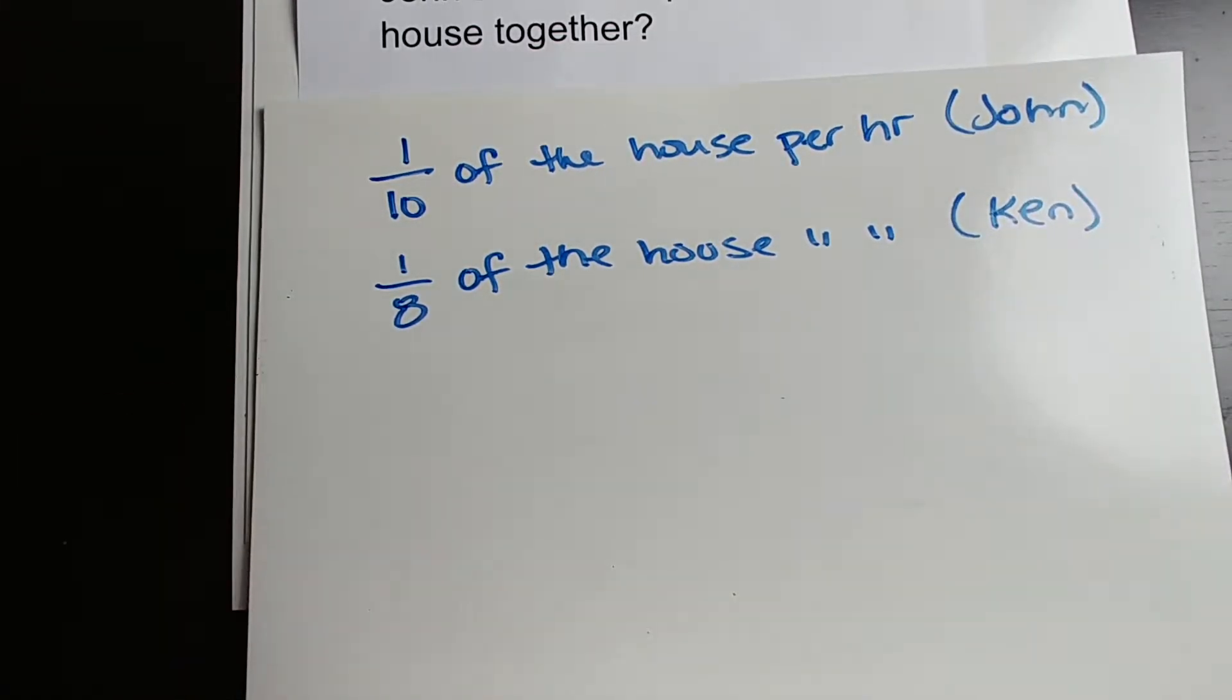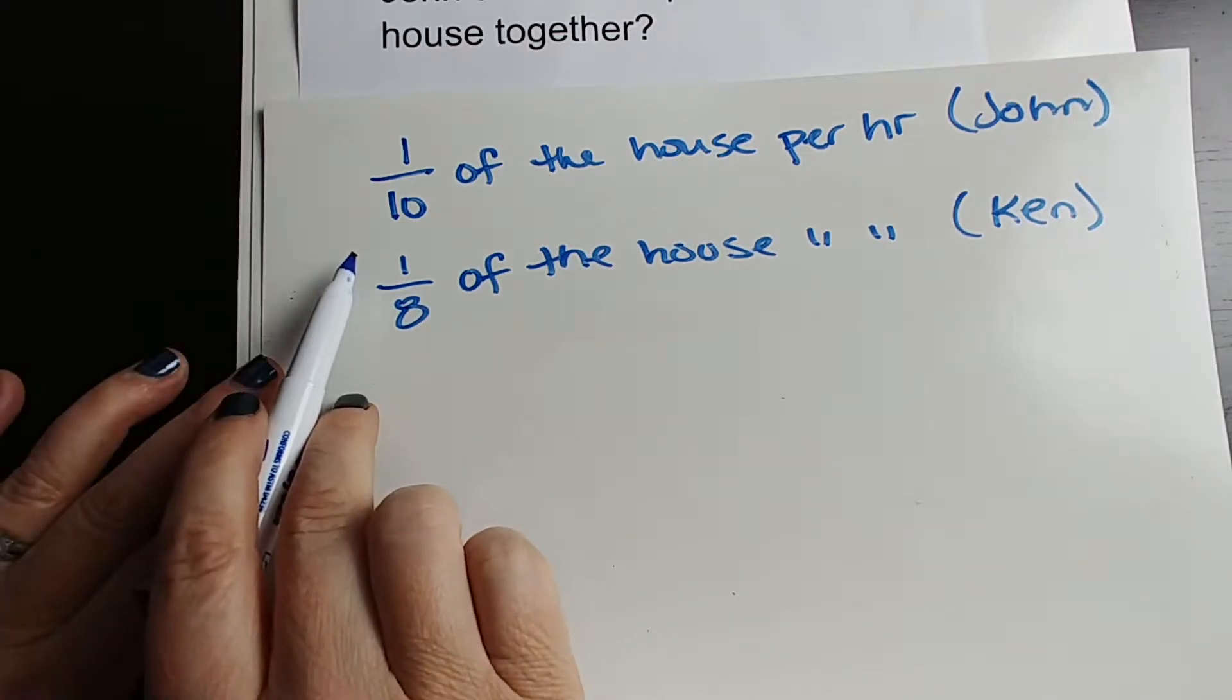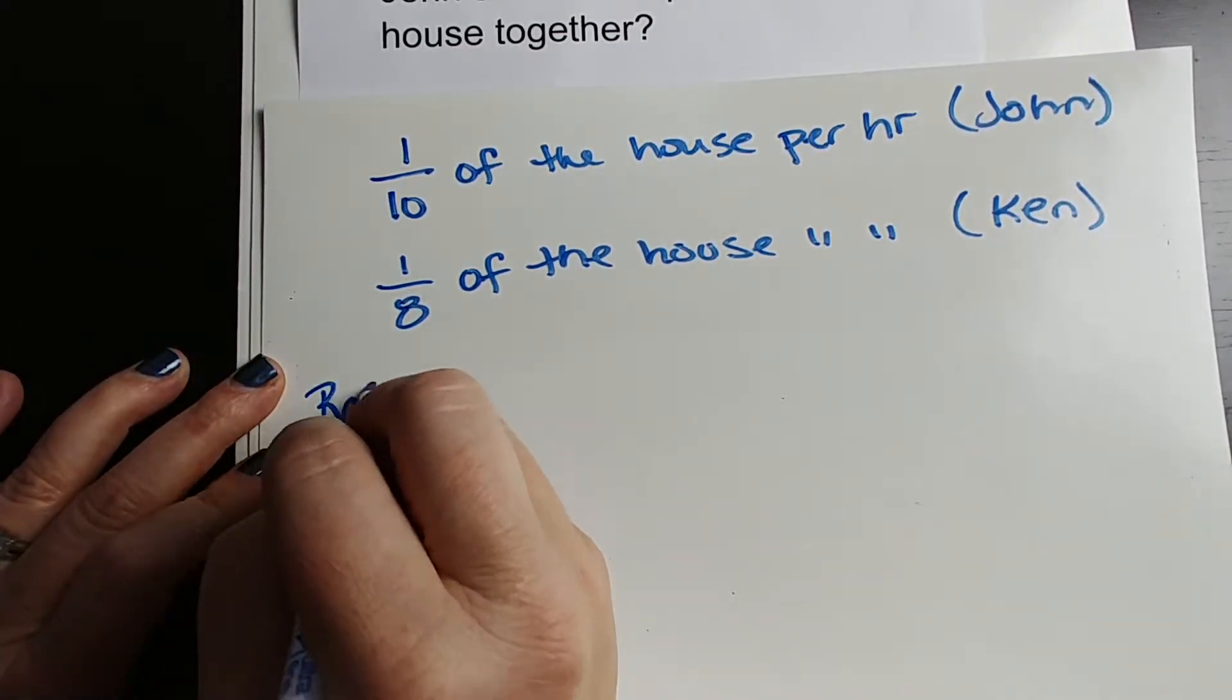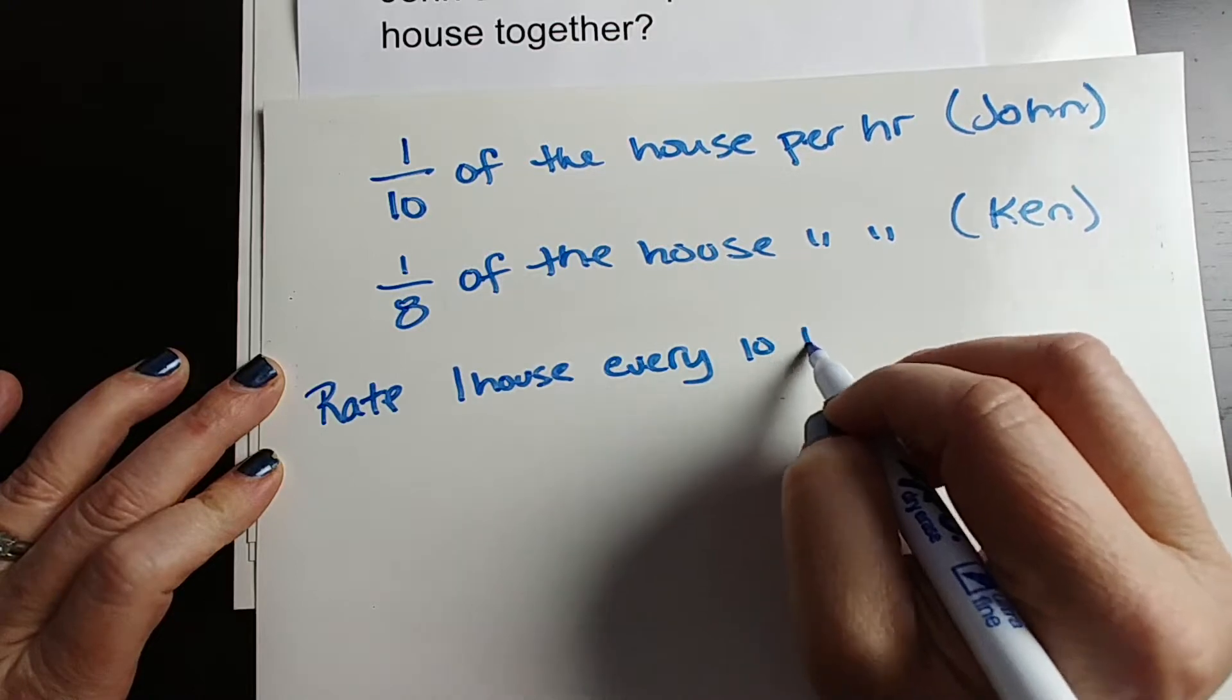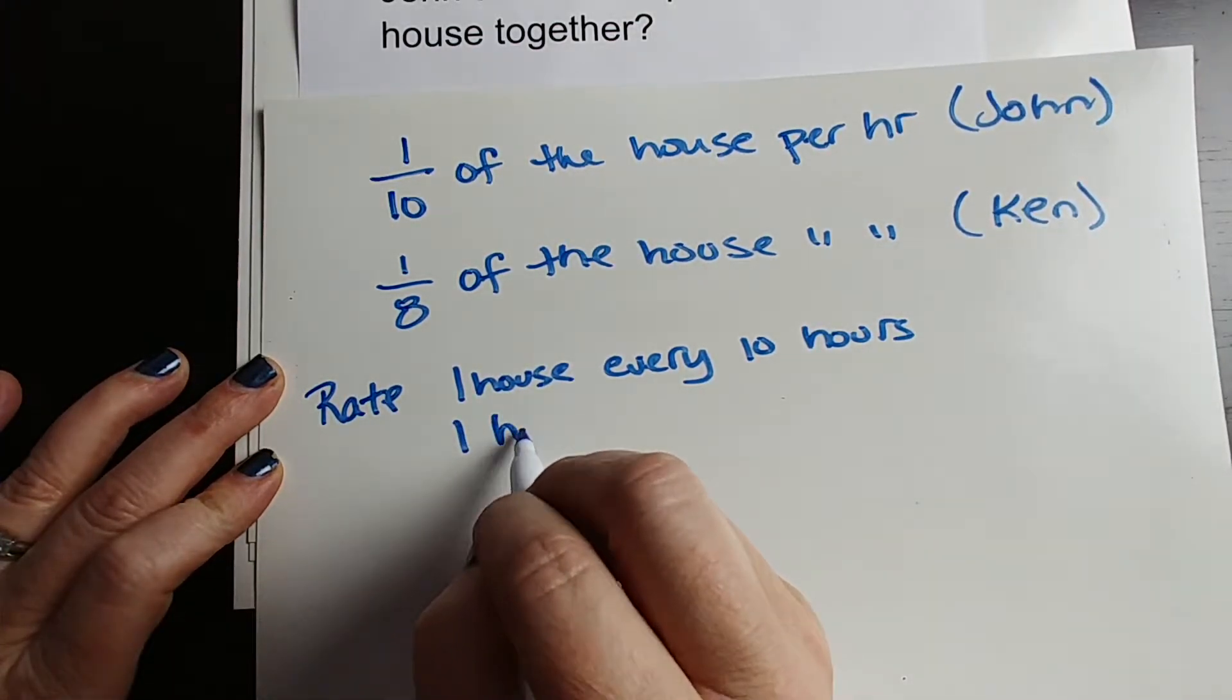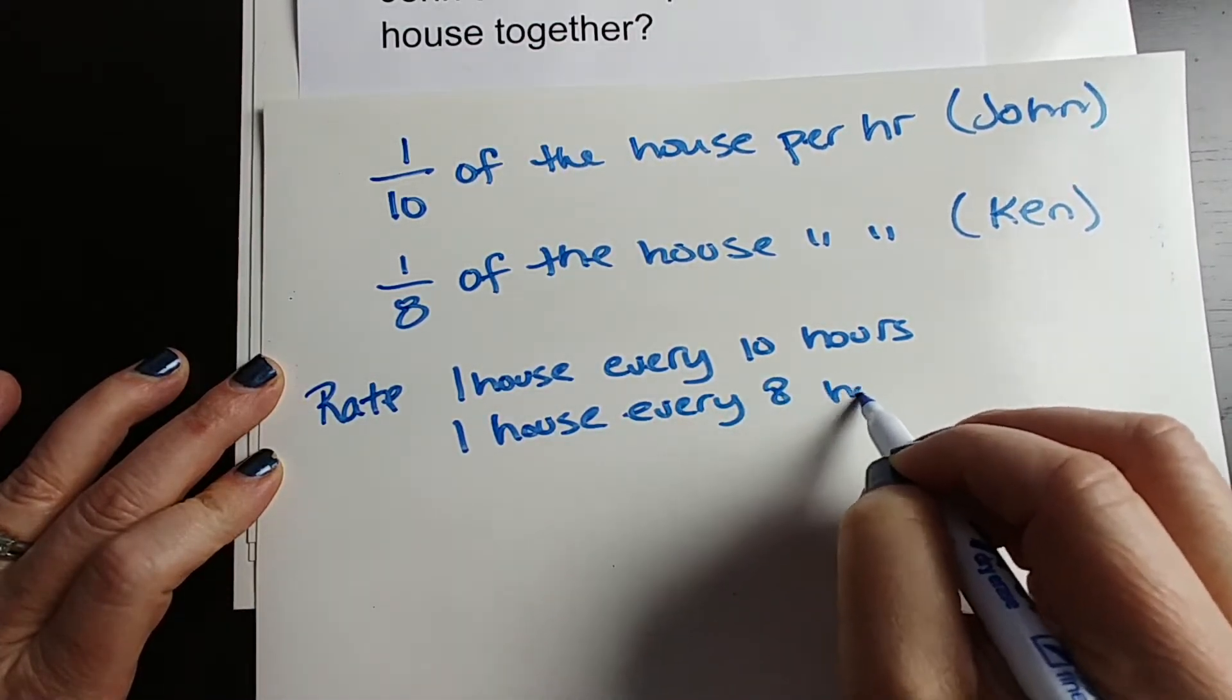So then it's easy to see, and we can read this as 1 house per 10 hours. Right? So it's a rate of, so the rate is 1 house every 10 hours. It's important to be able to see that. Or 1 house every 8 hours.